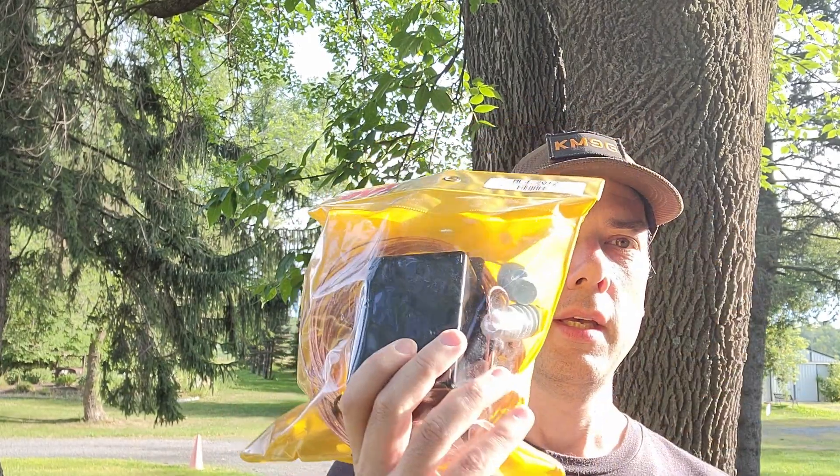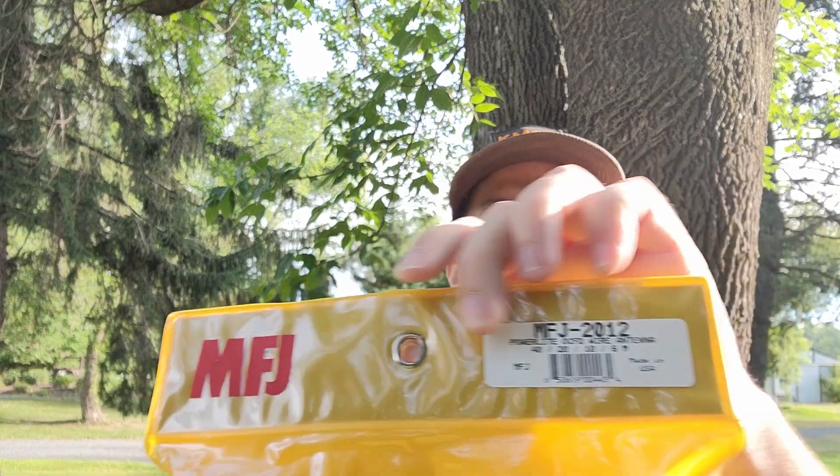Howdy everybody, Steve here, KM9G, and today we're going to play with a new antenna. This is the MFJ 2012, 40-20-10-6 meter off-center fed dipole. I'm going to put it up in a tree. Let's get to it.